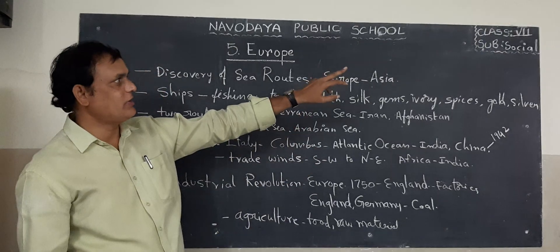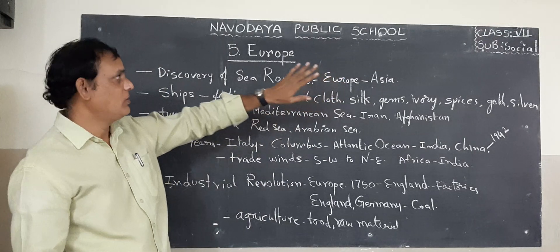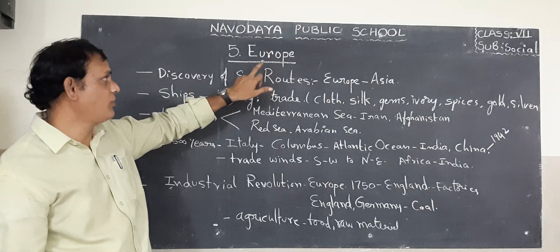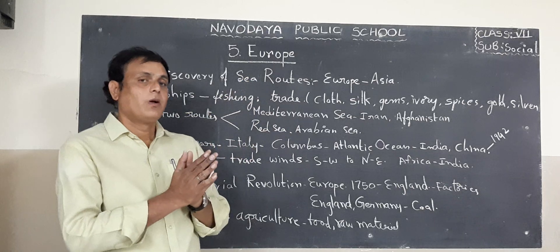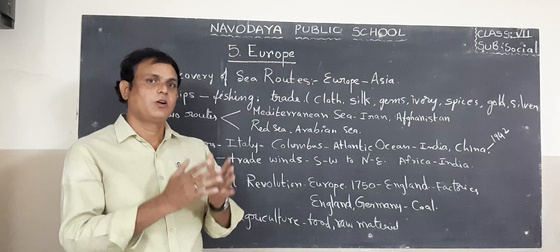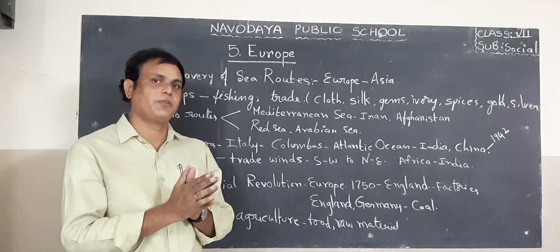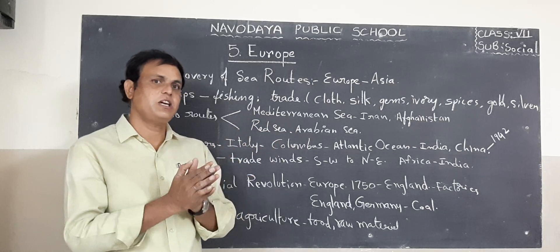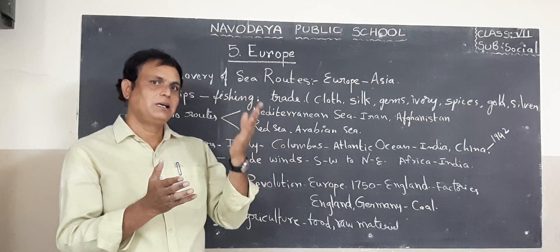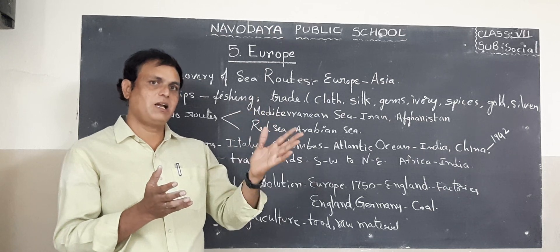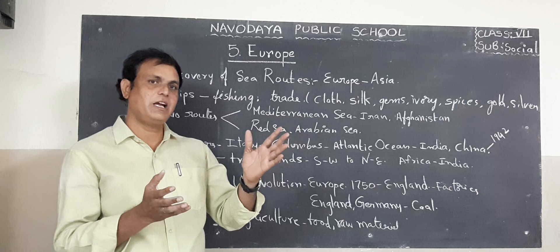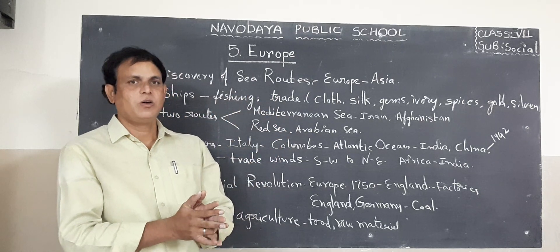This is 7th class social studies, Lesson 5 on Europe. In the previous class, I talked about European countries — England, Germany, France, Spain, Italy, Norway, Sweden, Finland, Denmark, and Netherlands (also known as Holland). These are all European countries.